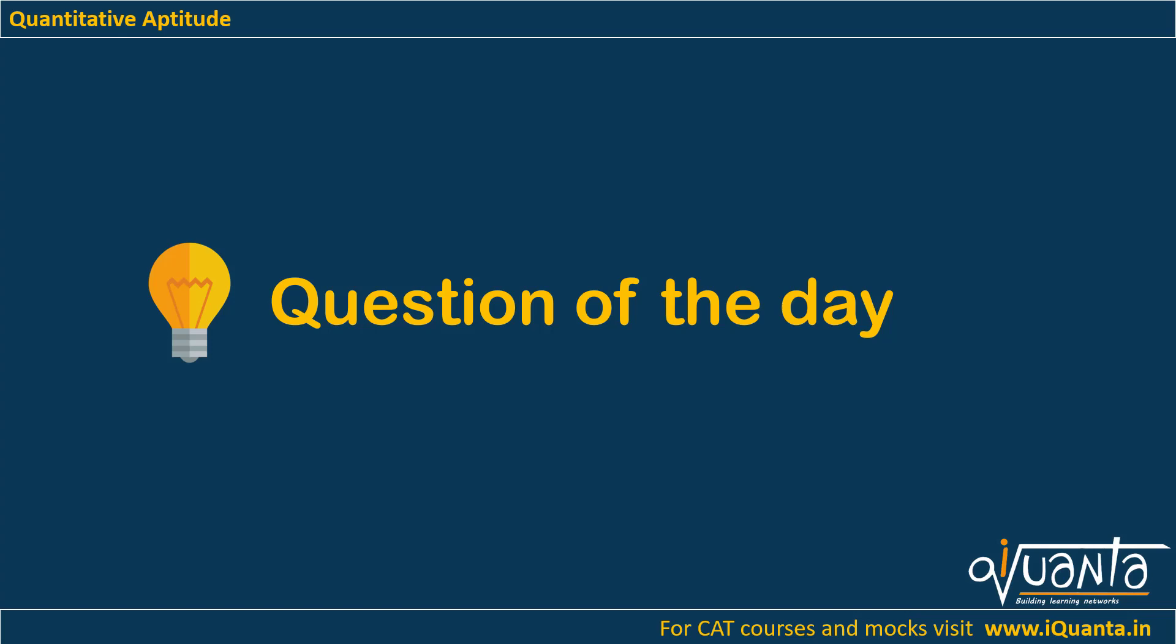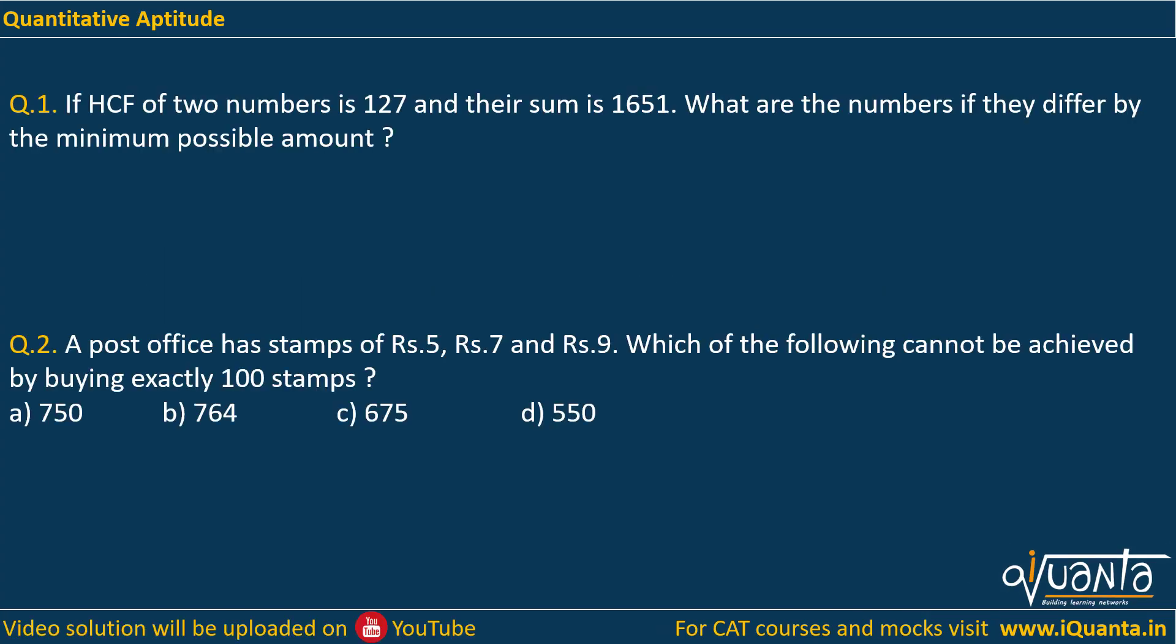Hello everyone. Today we have two easy questions from numbers. The first one is if HCF of two numbers is 127 and their sum is 1651, what are the numbers if they differ by the minimum possible amount?